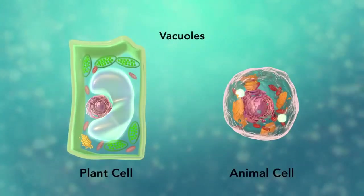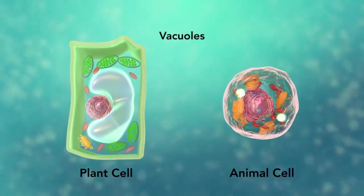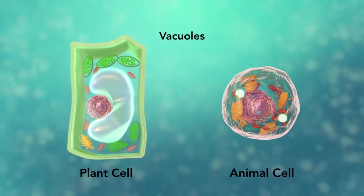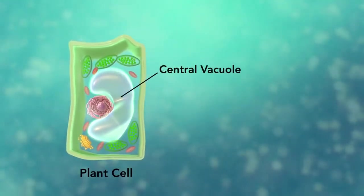Vacuoles are sac-like structures that store different materials. Here in this plant cell, the central vacuole stores water.